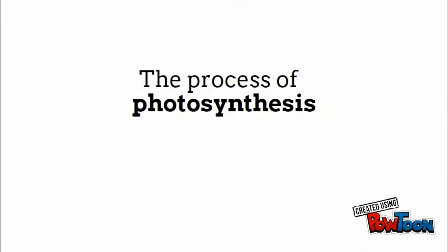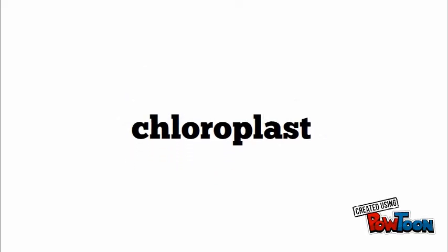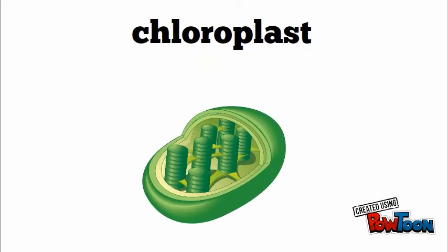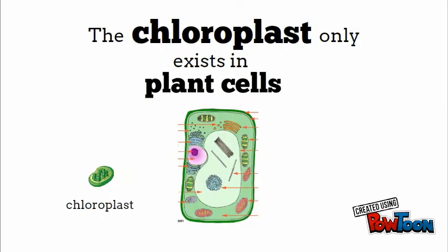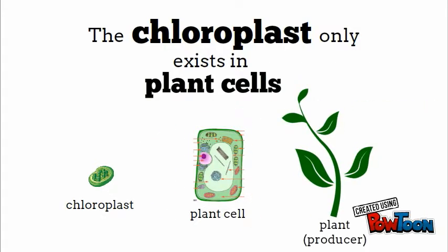The process of photosynthesis takes place in the chloroplast. These chloroplasts only exist in plant cells, and this is why plants — also known as producers — are the only organisms that can photosynthesize.